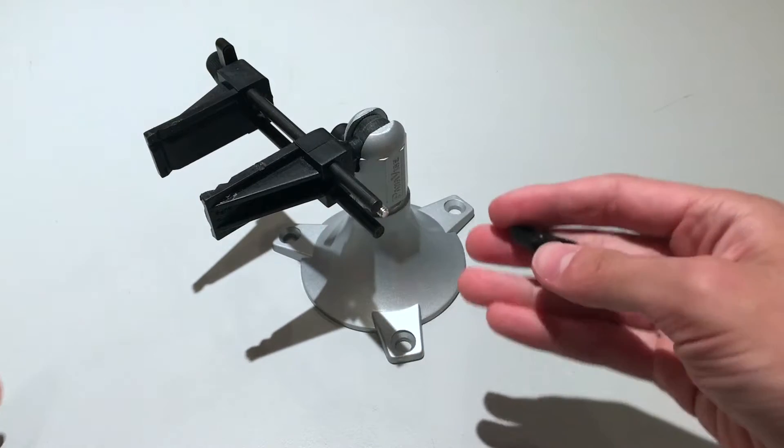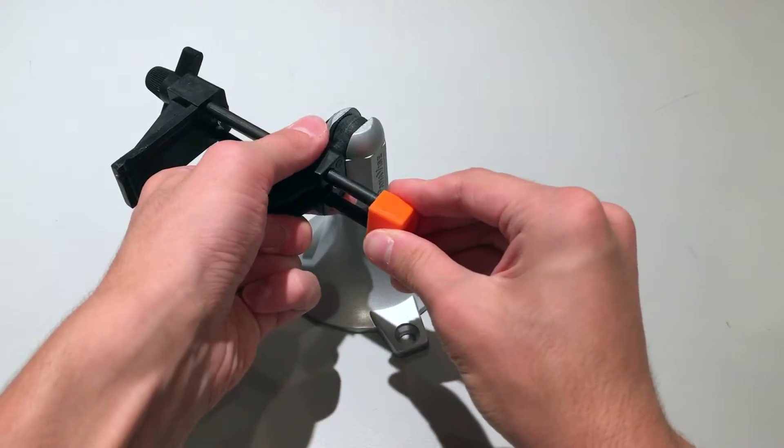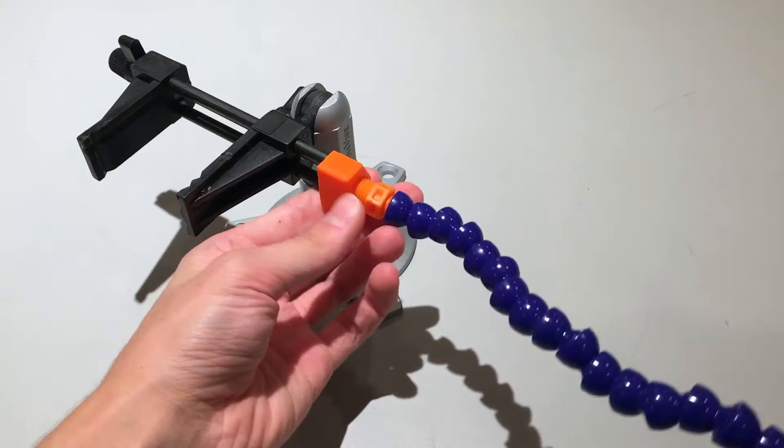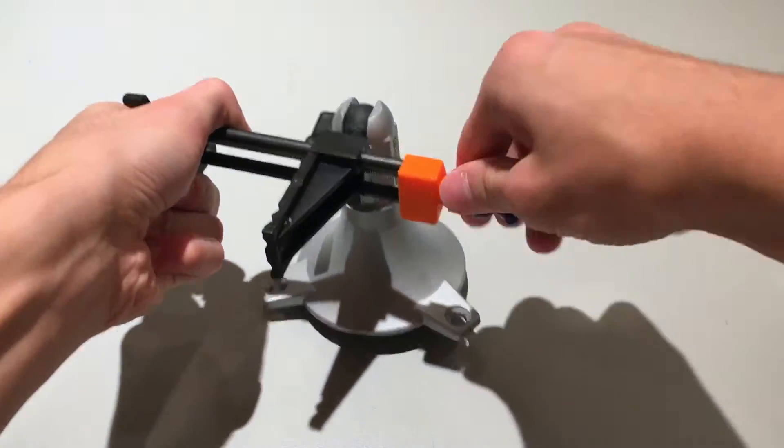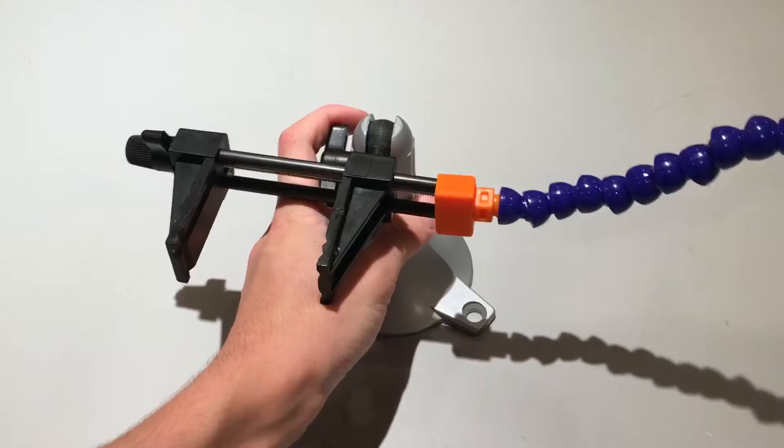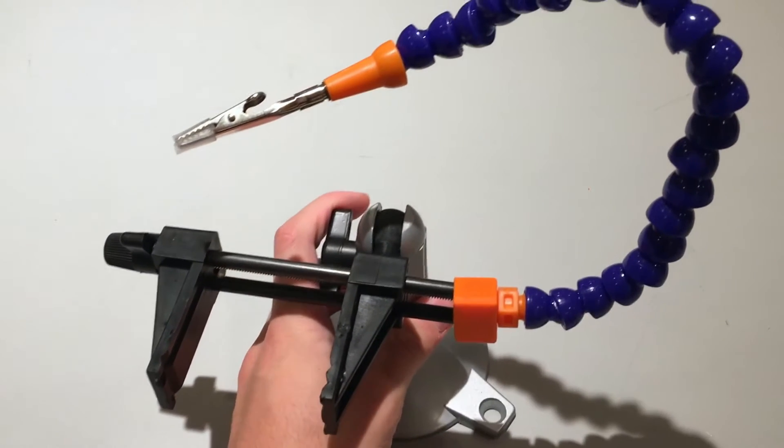Once you have your part printed, take the end cap off the rails of the PanaVice and put the part in place. Screw the helping hand into the threads, and there you go. You now have an extra positionable appendage to hold electronics, or really anything you want.